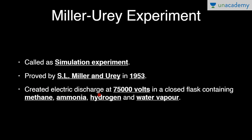They created an electric discharge at 75,000 volts in a closed flask containing methane, ammonia, hydrogen, and water vapor. They tried to recreate the conditions of primitive atmosphere that were present at the time of origin of Earth. These gases — methane, ammonia, hydrogen, and water vapor — are the gases of the primitive atmosphere, and a mixture of these gases was taken in the closed flask.